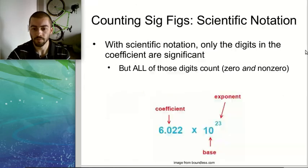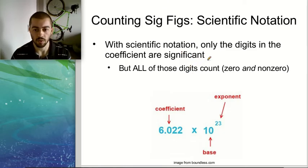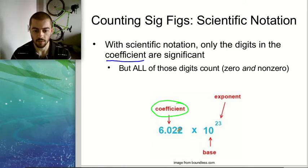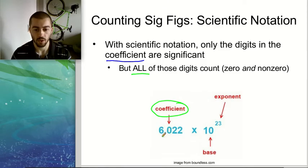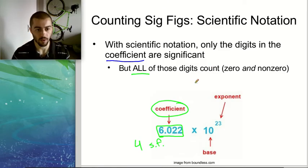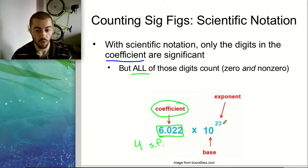We can also look at scientific notation — how do we count sig figs there? It's actually really easy, because with scientific notation, only the digits in the coefficient are significant. The coefficient is this first number, not including the times 10 to the whatever exponent. All of those numbers in the coefficient count towards your sig figs regardless of whether they're zero or not. In this example, we have four digits in our coefficient, so this one would have four significant figures. You don't have to worry about any America rule — it's just all the numbers in the coefficient, and all of them count.